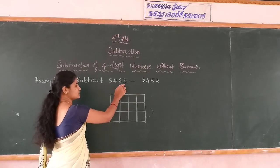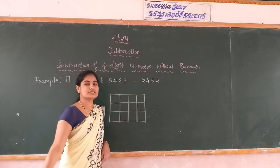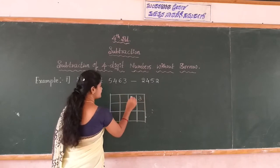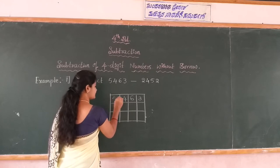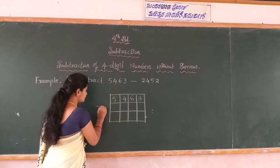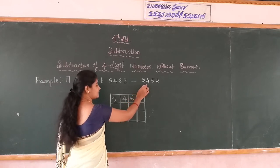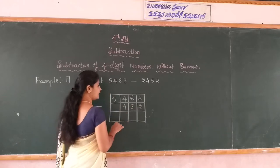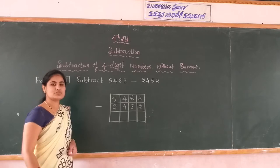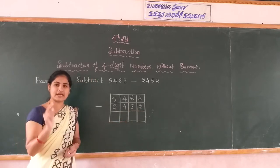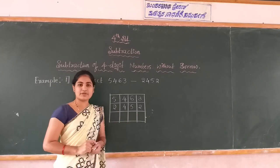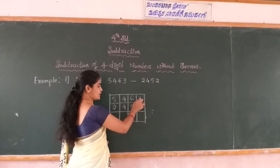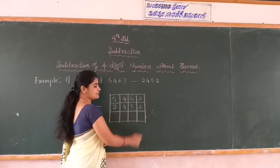First write 5463 because this is the bigger number compared to 2452. 3 is in the ones place, 6 is in the tens place, 4 is in the hundreds place, and 5 is in the thousands place. This is the subtraction, so you put a minus. Then write the smaller number 2452 below: 2 is in the ones place, 5 is in the tens place, 4 is in the hundreds place, and 2 is in the thousands place. Then start the subtraction from the ones place.